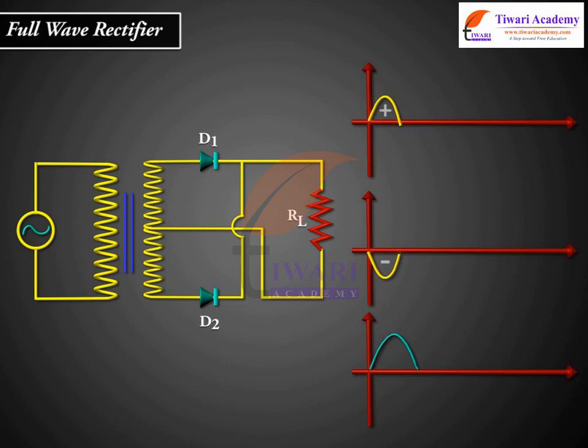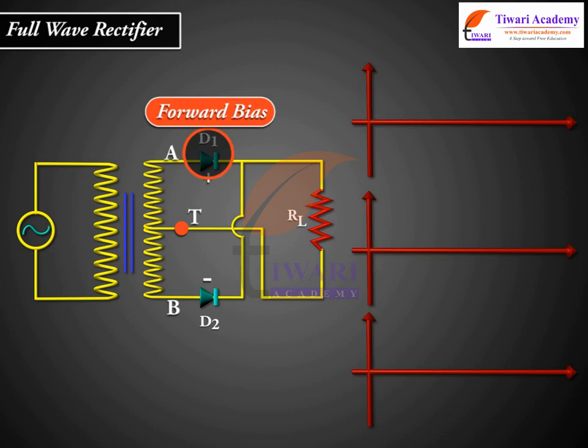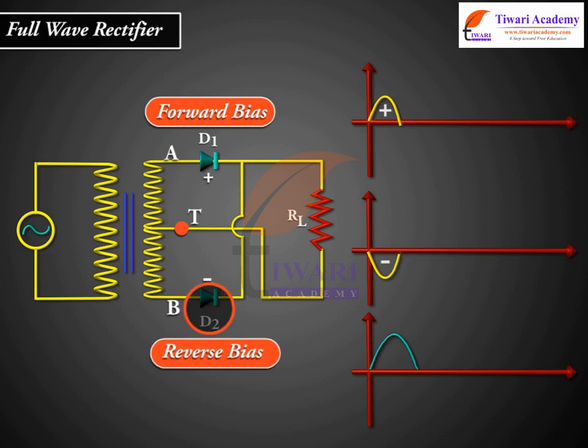During the positive half cycle of AC, terminal A is positive and terminal B is negative with respect to the center tap T. The diode D2 is reverse biased and does not conduct.